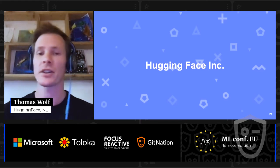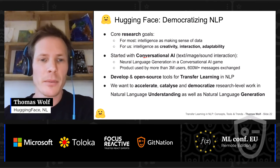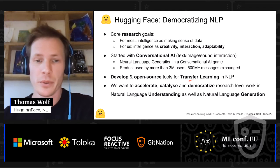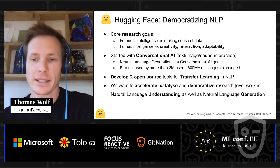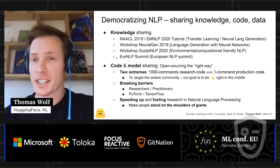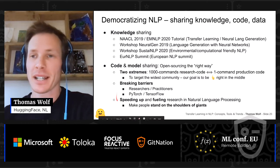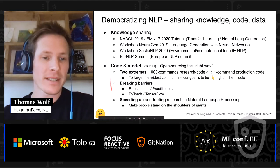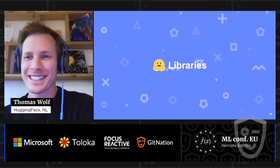At Hugging Face we try to tackle some of these shortcomings and democratize NLP. We started as a chatbot company and open-sourced a lot of tools, which caught so much interest in the community that we are now fully focused on catalyzing and democratizing research-level work. We do this in two main ways: knowledge sharing — which is why I'm talking today — and open-sourcing libraries that let people leverage these developments and build better models.